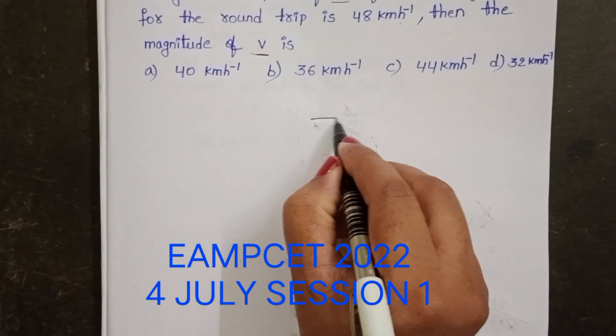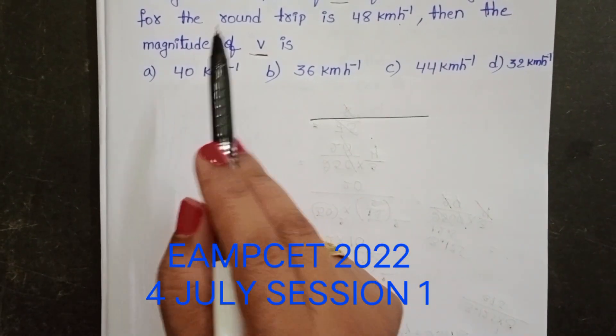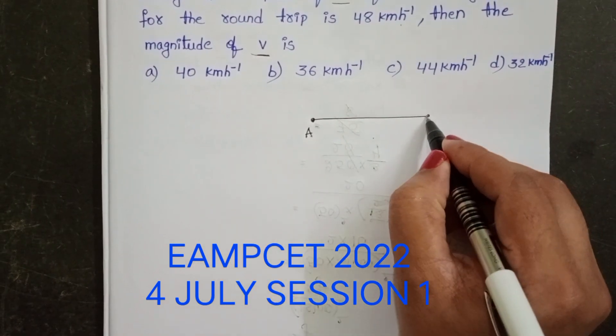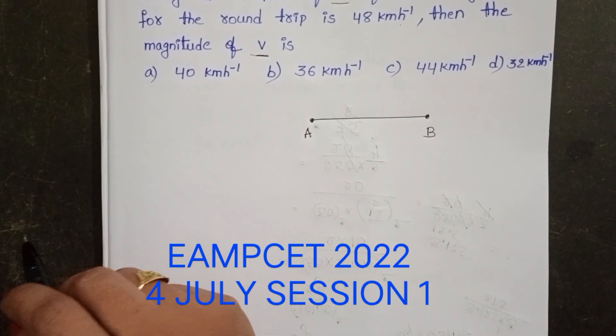In the given question, we don't know the distance travelled by the car. Let us take A as the initial position and B as the final position.